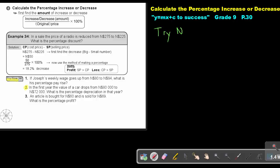Okay. So let's try it now. And that's going to be 34. And we're just going to do number two. Okay. In the first year, the value of a car drops from 80,000 to 72,000.